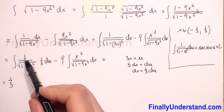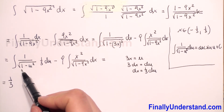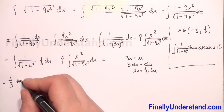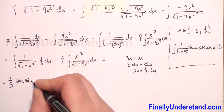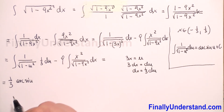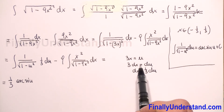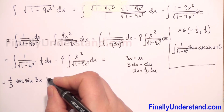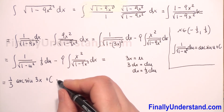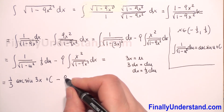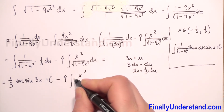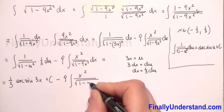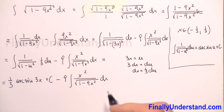We know that the integral of 1 over √(1-u²) du equals arcsin(u). In our example u = 3x, so coming back to our substitution, the first part equals (1/3) arcsin(3x) plus a constant, minus 9 times the integral of x² over √(1-9x²) dx.